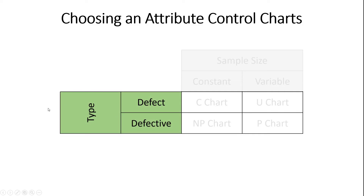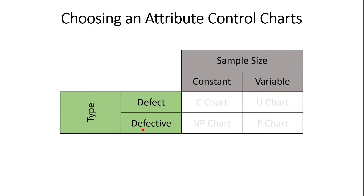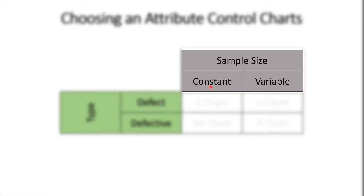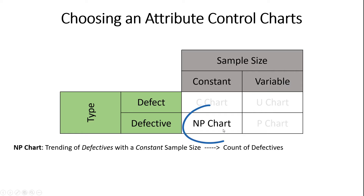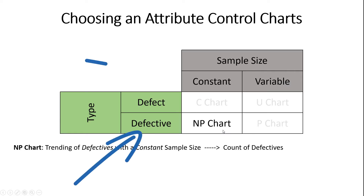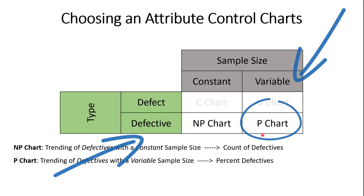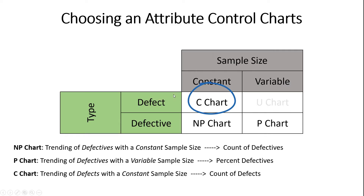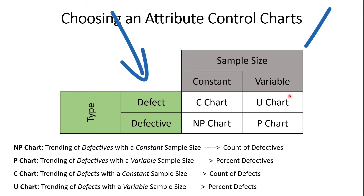There are two variables to consider when choosing the right control chart. The first is what type of data we're counting: defectives or defects. The second is whether your sample size is constant or variable. If you're trending defective units with a constant sample size, use an NP chart. With a variable sample size, use a P chart. If you're trending defects with a constant sample size, use the C chart. And if you're trending defects with a variable sample size, use the U chart.